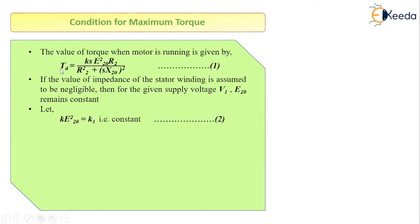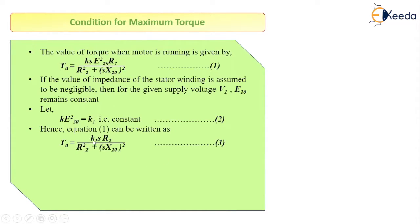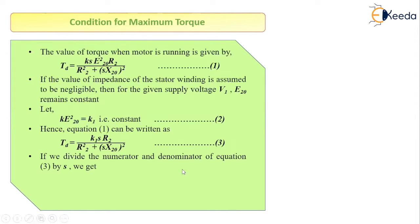So let us assume K·E20² = K1, a constant. In the numerator we already have constant K, so we combine them as K1. From equations 1 and 2, TD = K1·S·R2 divided by (R2² + (S·X20)²). Let this be equation number 3.